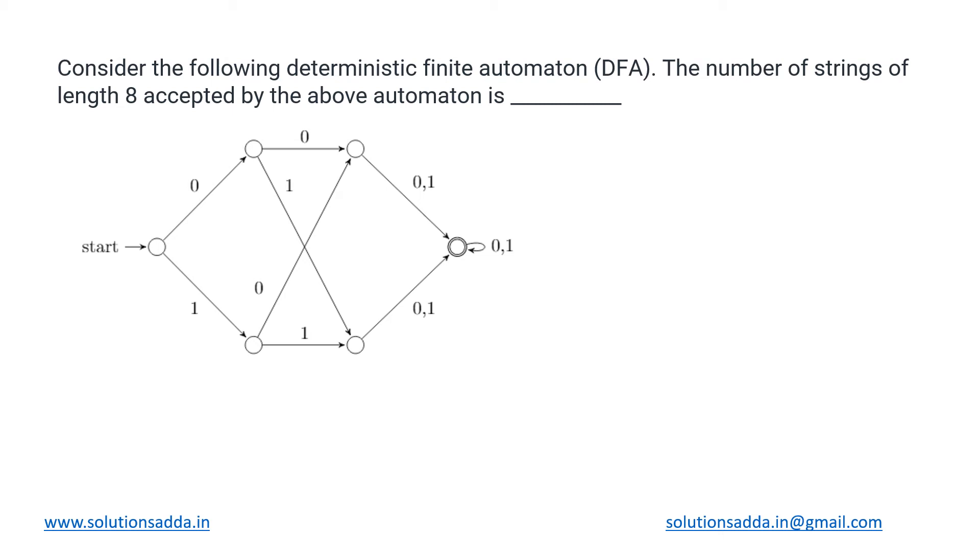This is a numeric type question from Theory of Computation. We have been given a DFA and we need to determine the number of strings of length 8 that are accepted by the given DFA. In this DFA you can see that there is only one final state and this is the start state. So how many ways are there to reach from the start state to final state?